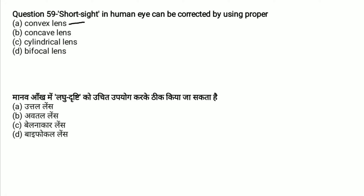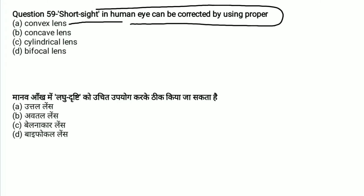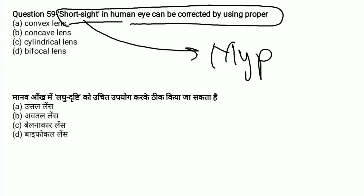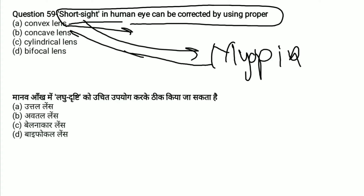Short-sightedness in the human eye can be corrected by using which lens? Short-sightedness is myopia. It is corrected using a concave lens. A convex lens is used for hypermetropia.